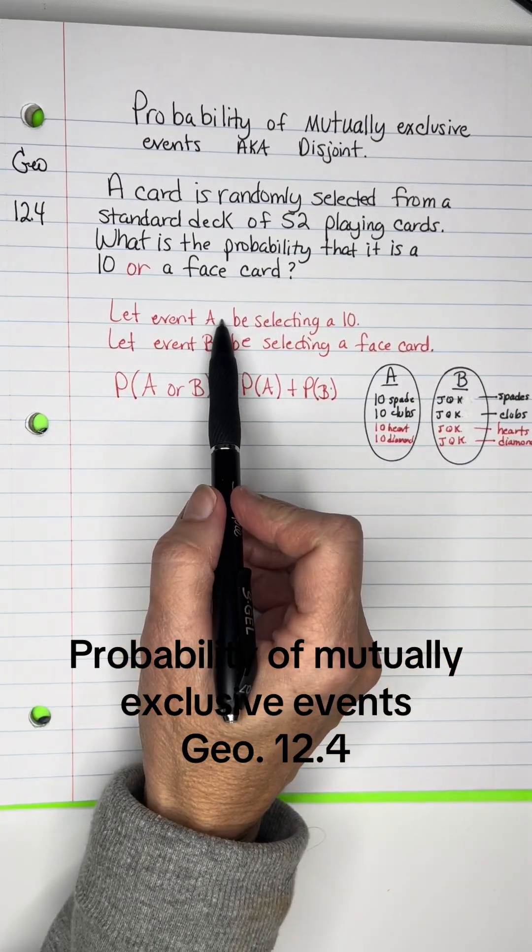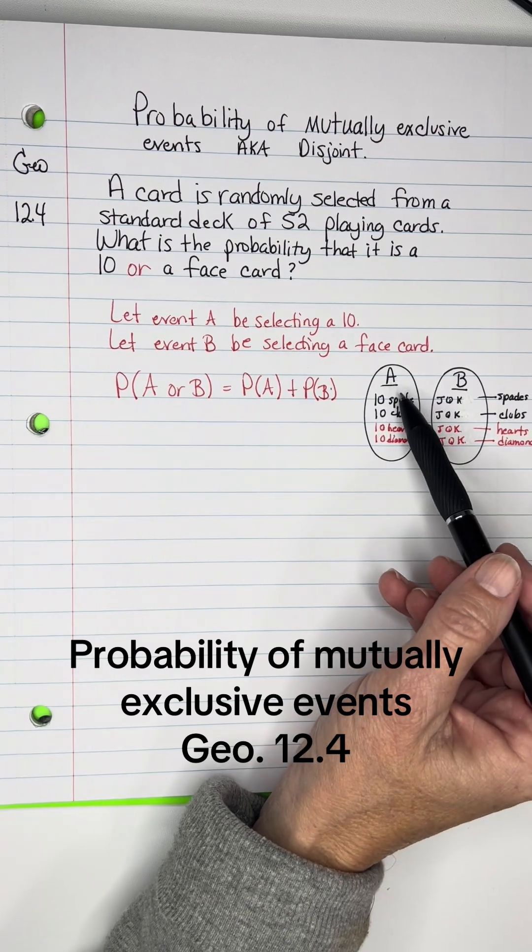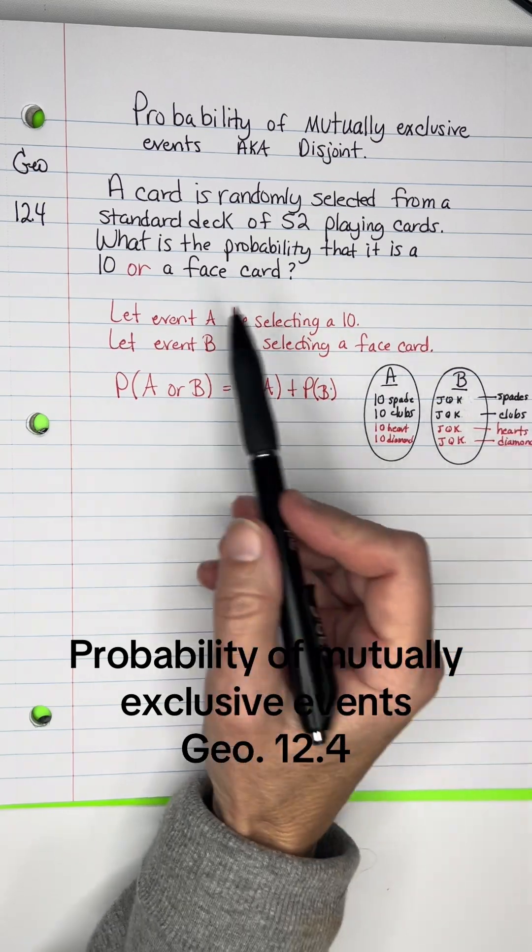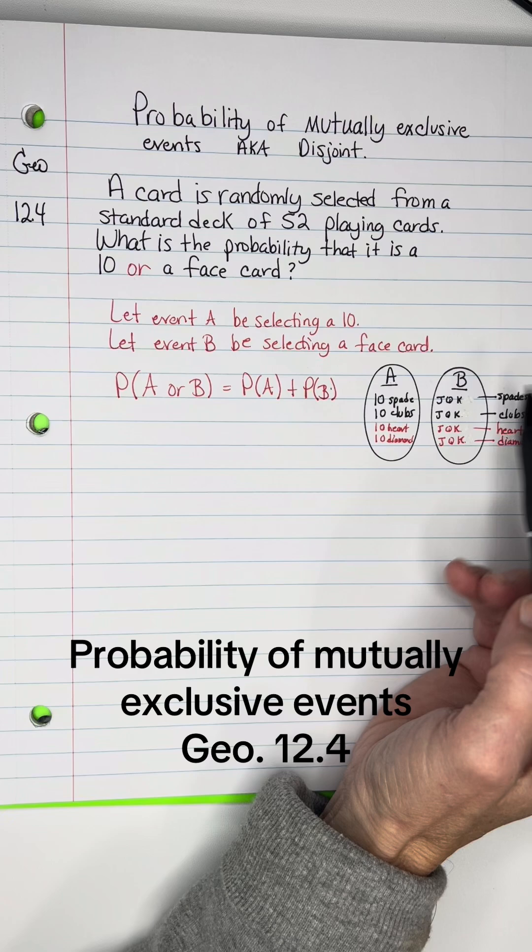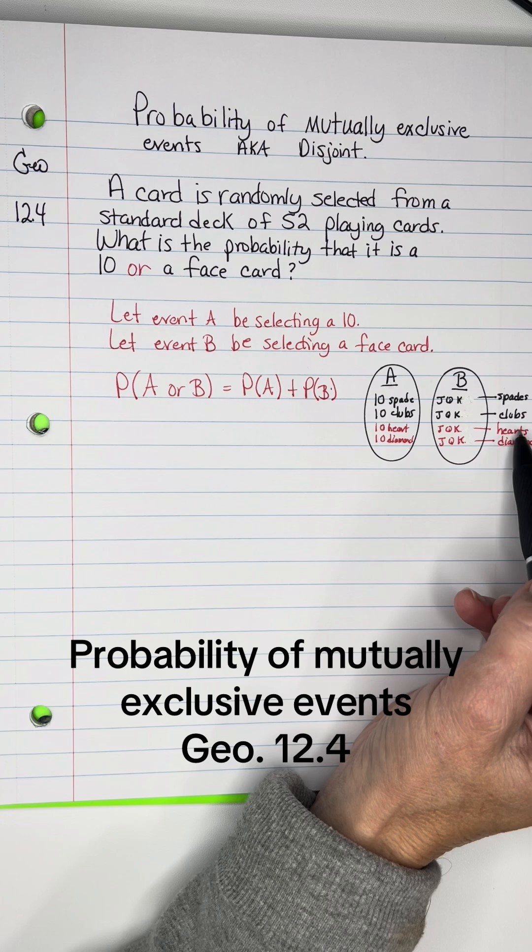Okay, we're going to say event A is selecting a 10. So here's my event A: there's the 10 of spades, clubs, hearts, and diamonds. And event B will be selecting a face card. That's going to be Jack, Queen, King of the spades, clubs, hearts, and diamonds.